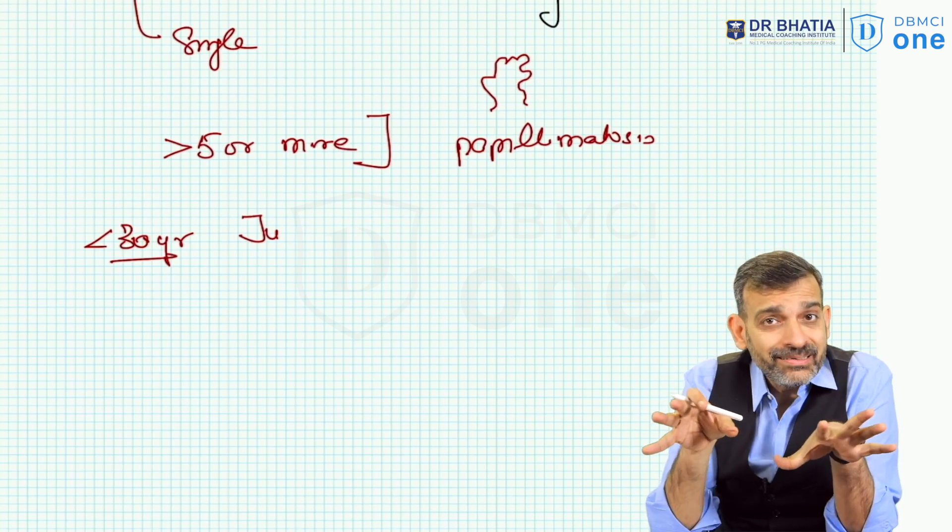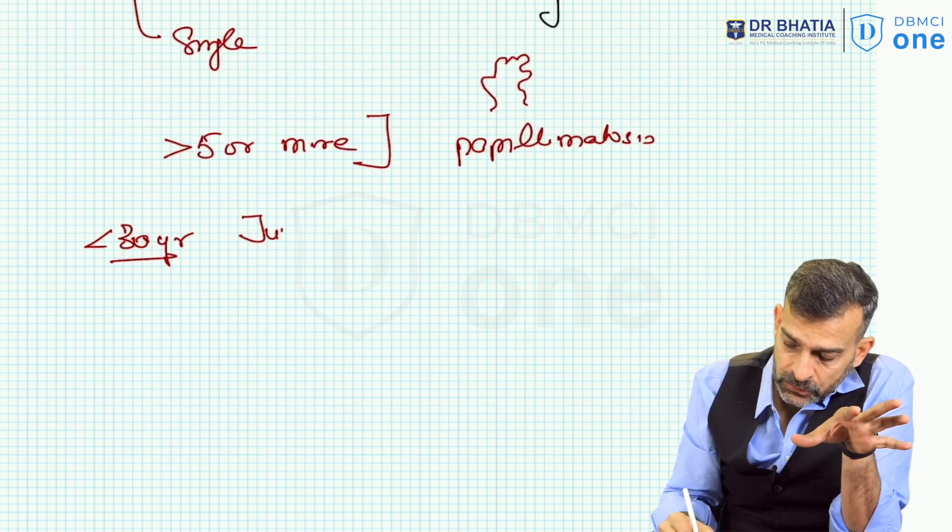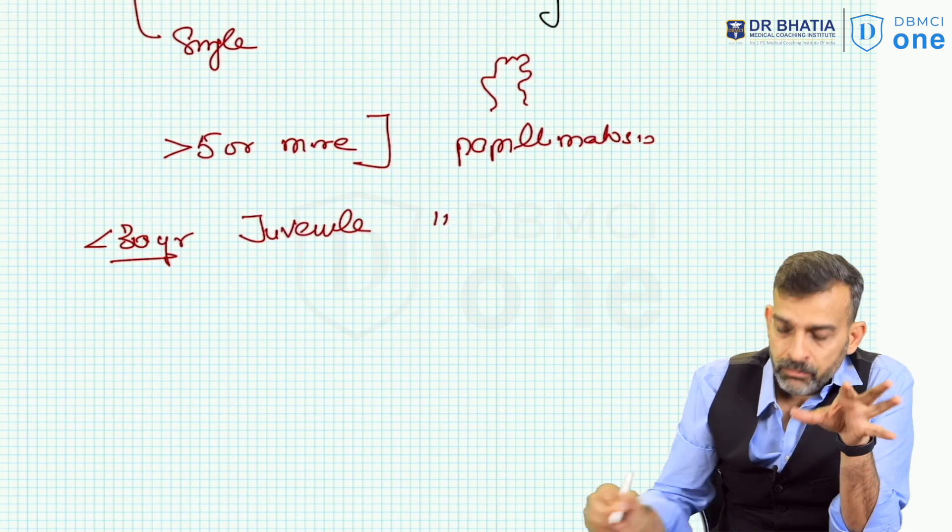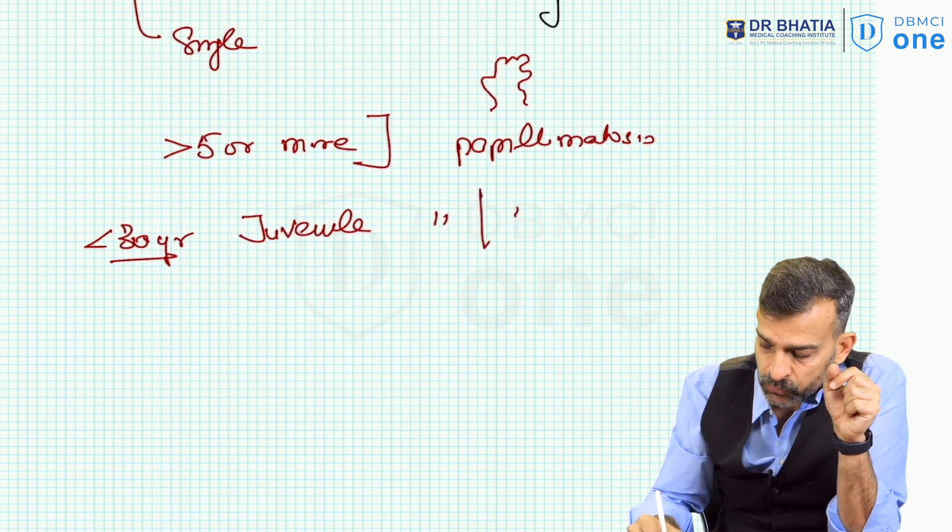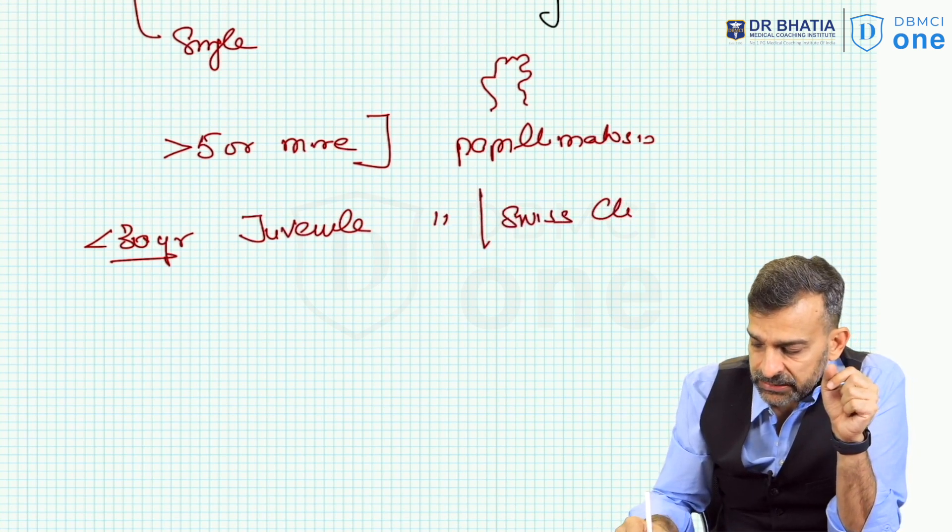In a young female who is less than 30 years of age, it is called juvenile papillomatosis or Swiss cheese disease.